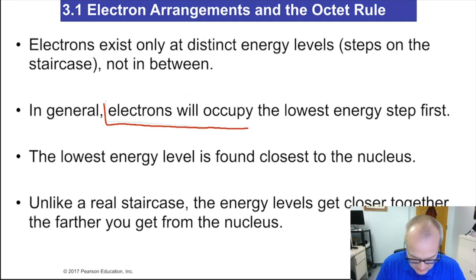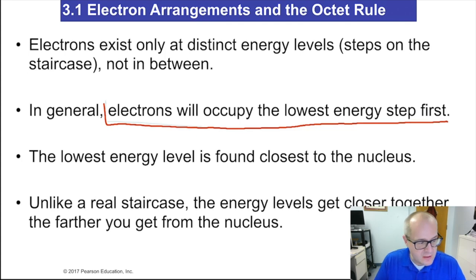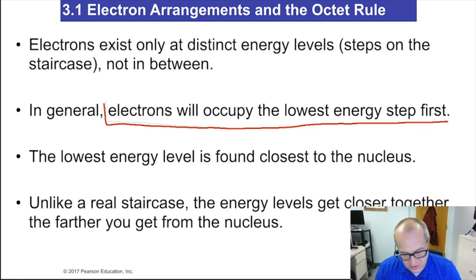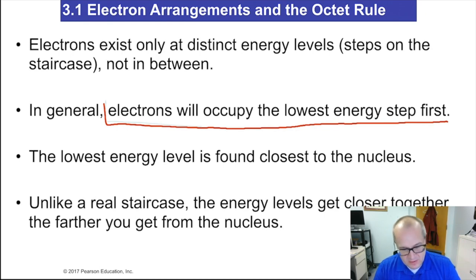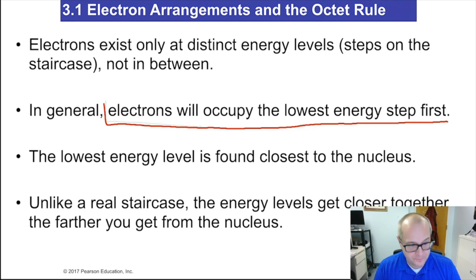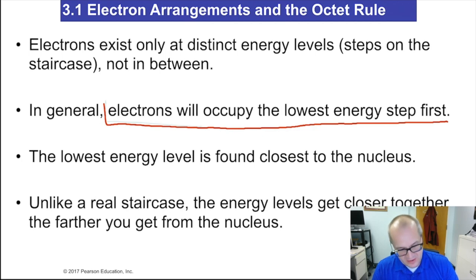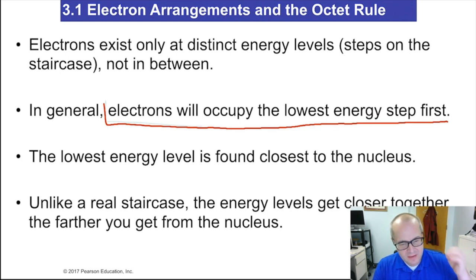In general, electrons will occupy the lowest energy step first. When filling an atom's electrons, you fill the first rung and work your way up. If you had people filling a staircase, they'd fill the bottom rungs first because those are low energy — people don't want to walk up the stairs. In the atom's case, the lowest energy level is closest to the nucleus, because that's where the protons are. Remember, electrons are negative — they want to be by the protons.